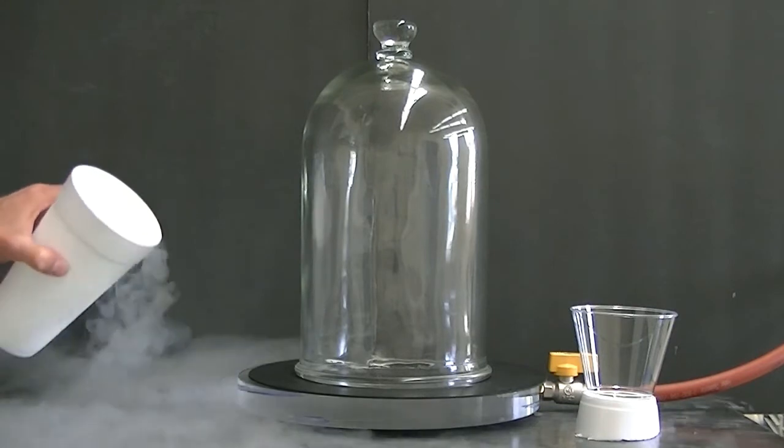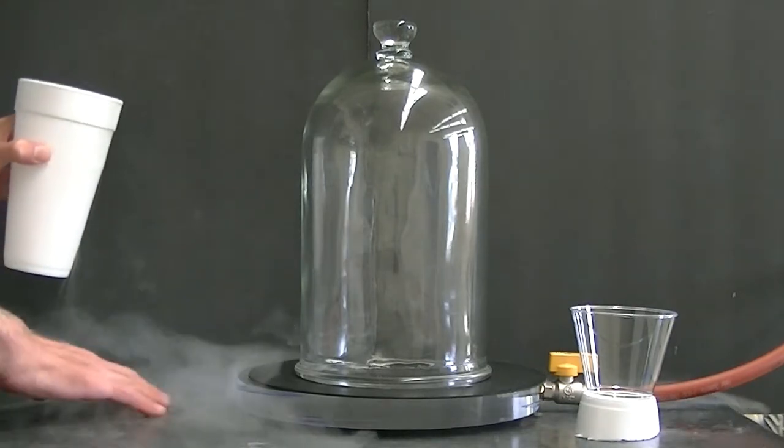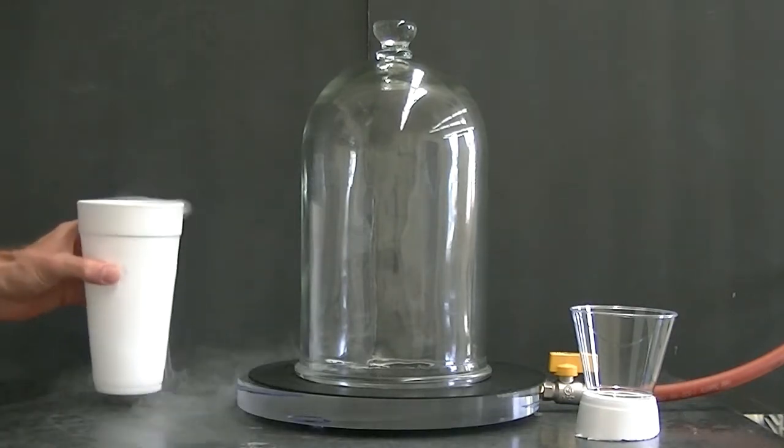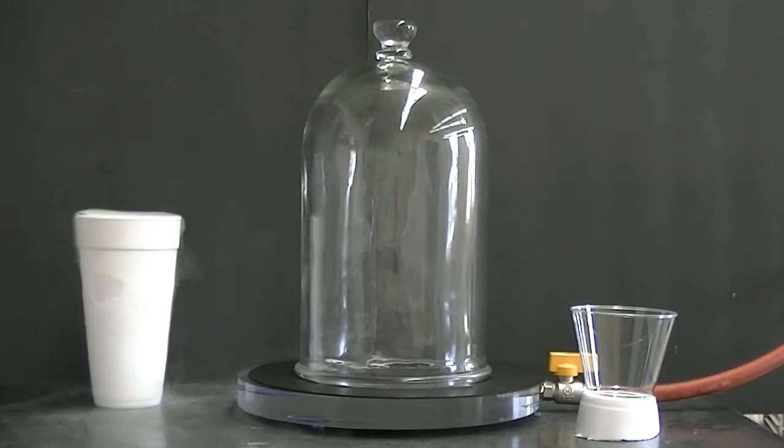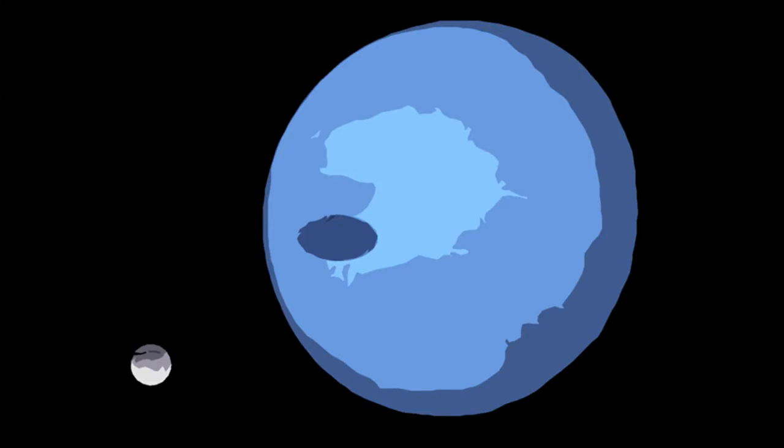It turns out that you can freeze liquid nitrogen into solid nitrogen. To do that, you have to cool the liquid nitrogen a little bit, and you also have to reduce the pressure on the liquid nitrogen. Why might I want to make solid nitrogen? Well, one of the moons of Neptune, called Triton, has solid nitrogen on its surface. So by making solid nitrogen, we'll get a little bit of an idea what it looks like on the surface of Triton.